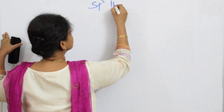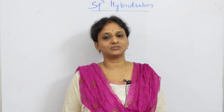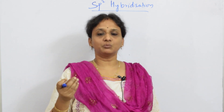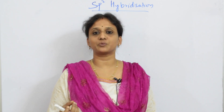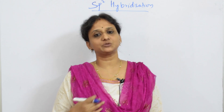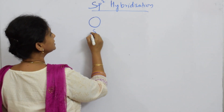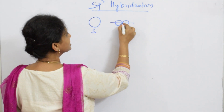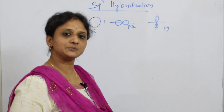We've already done SP hybridization, so let us start with SP2 hybridization. Whenever we study SP, SP2, SP3, or SP3D2 hybridization, we have to concentrate on how many S orbitals and how many P orbitals are intermixing together to form hybrid orbitals. In SP2 hybridization, as the title suggests, you have one S orbital and two P orbitals — PX and PY — intermixing together. That's why we call it SP2 hybridization.